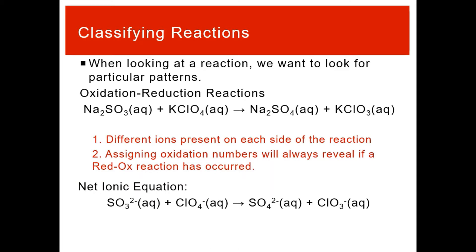Oxidation reduction reactions. Really, if we want to know if something is an oxidation reduction, we would need to assign oxidation numbers. That is really going to always be the way that we could identify it. But we can also tell if there's different ions present on each side of the reaction, that would be an indication.